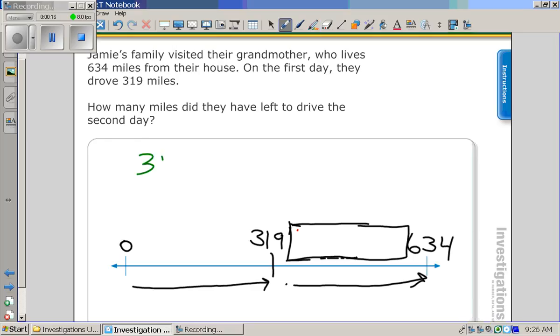319 plus 5 equals 324. Okay, so now we have the 4 in the right place.